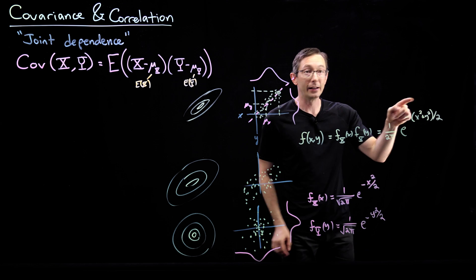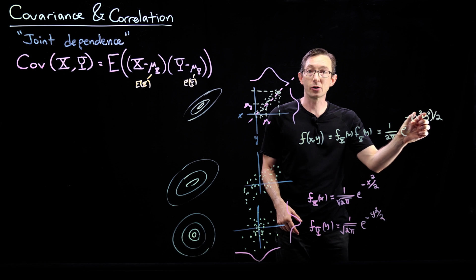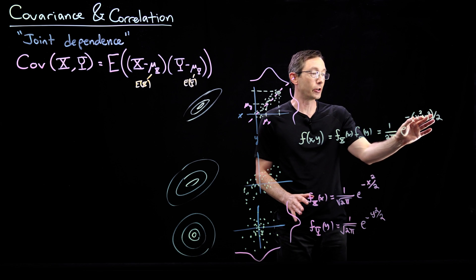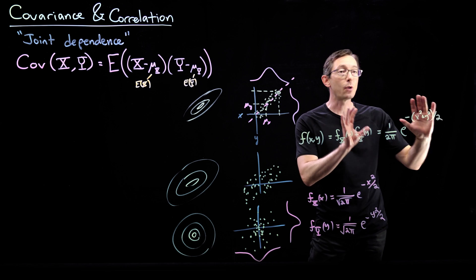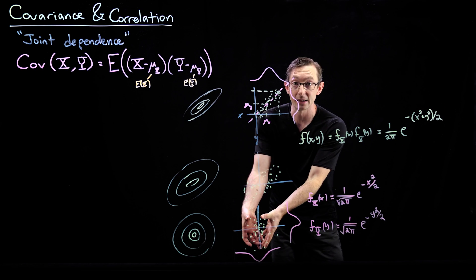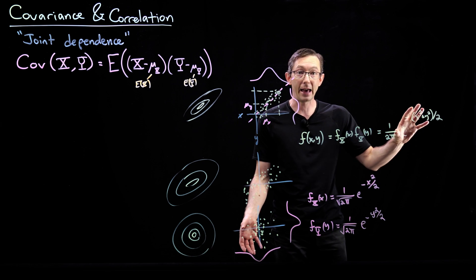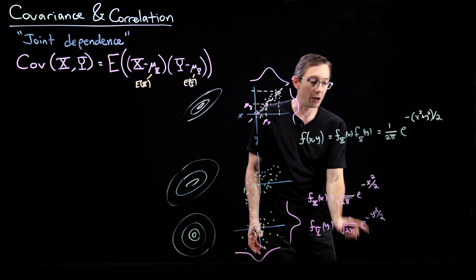This is exactly radially symmetric. This is a variable r squared. So the density now is a function of the radius away from this center point. This is what we expected.